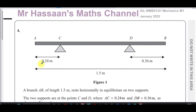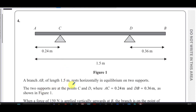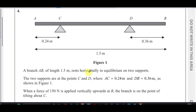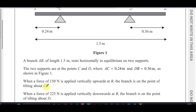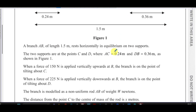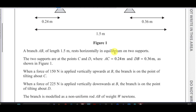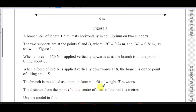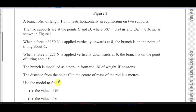We have a branch AB of length 1.5 meters resting horizontally in equilibrium on two supports C and D, where AC is 0.24 meters and BD is 0.36 meters. When a force of 150 newtons is applied vertically upwards at B, the branch is on the point of tilting about C. When a force of 225 newtons is applied vertically downwards at B, the branch is on the point of tilting about D. The branch is modeled as a non-uniform rod AB of weight W newtons, and the distance from C to the center of mass is x meters. We need to find W and x.